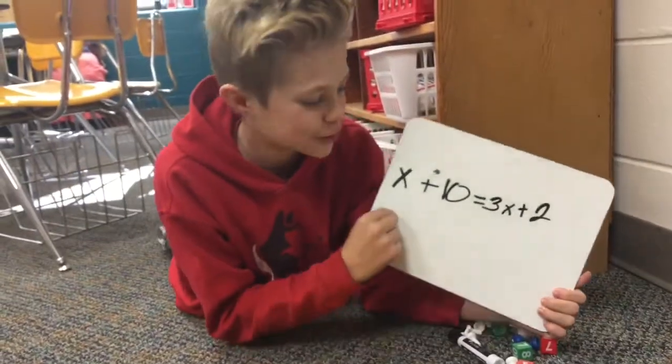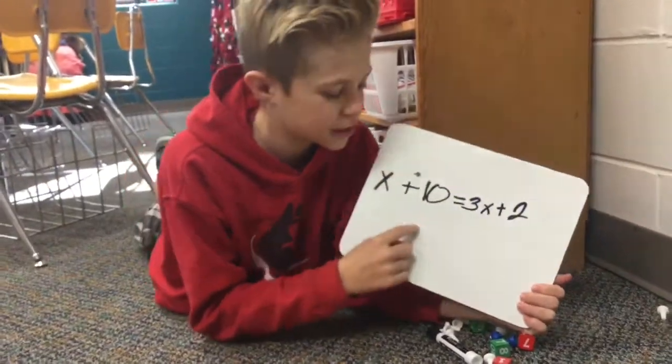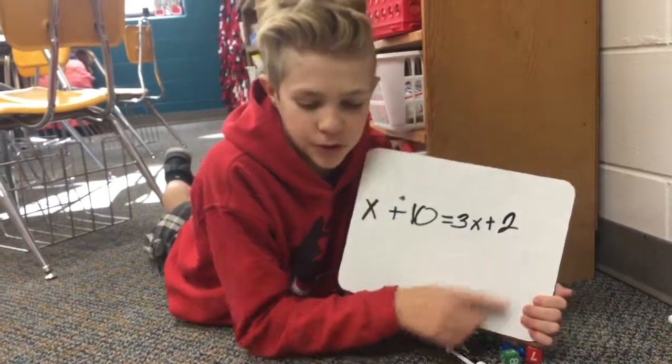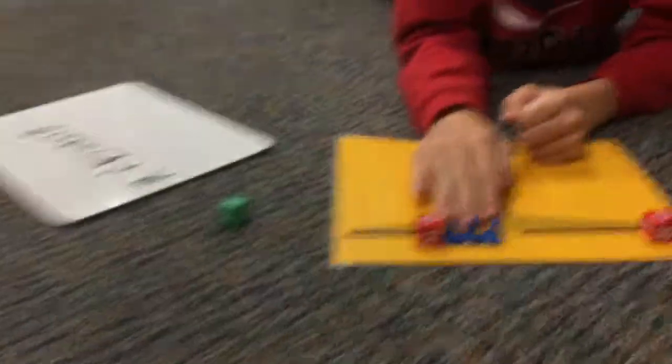This is the first problem that I'm going to be doing. x plus 10 equals 3x plus 2. The 3x is 3 blue pawns.